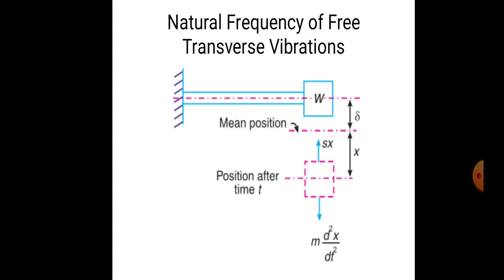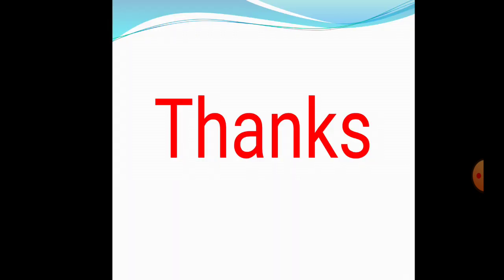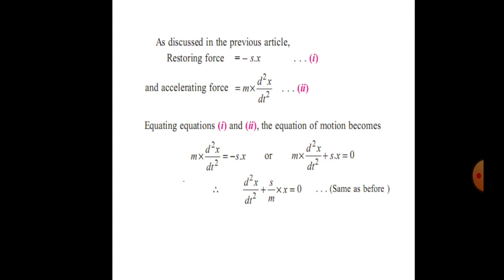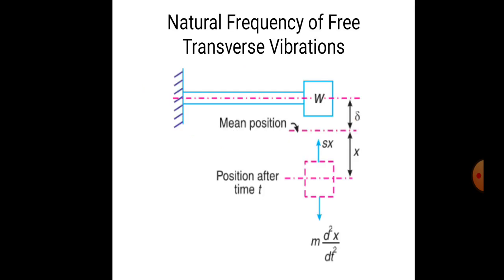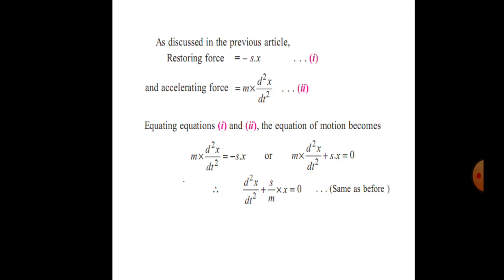Now the natural frequency of transverse vibrations. A shaft is connected at fixed supports with mass M attached. When an initial displacement is given, the shaft has deflection δ. When applying mass M and initial displacement x, the forces acting are: inertia force M·d²x/dt² and spring force S·x, where S is the stiffness of the body.